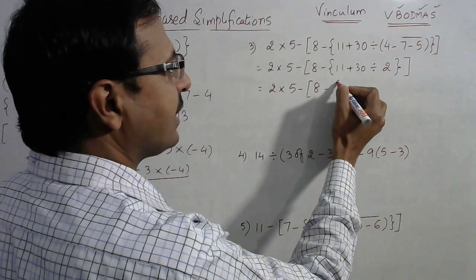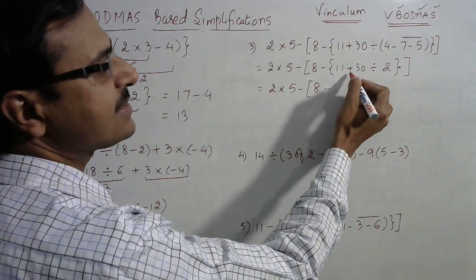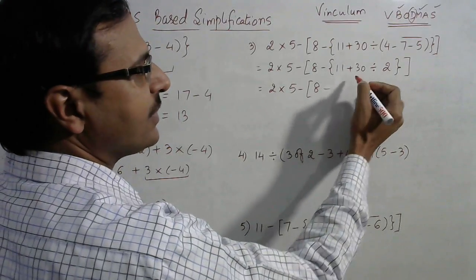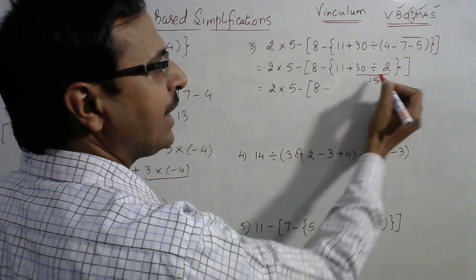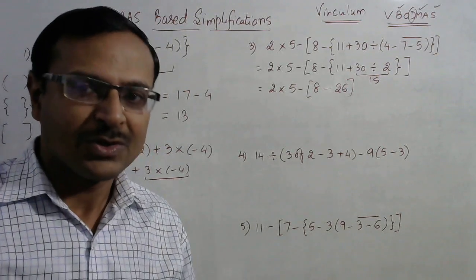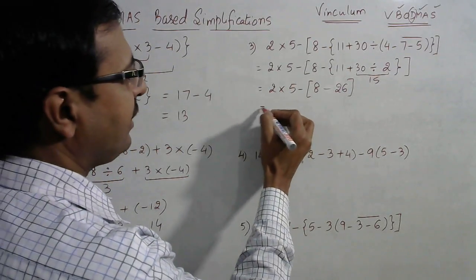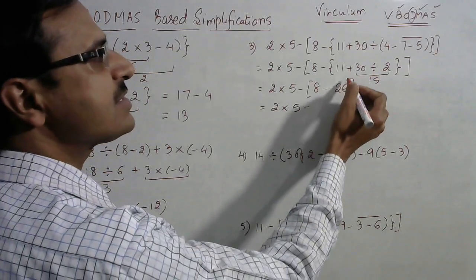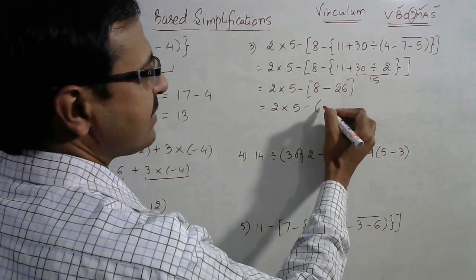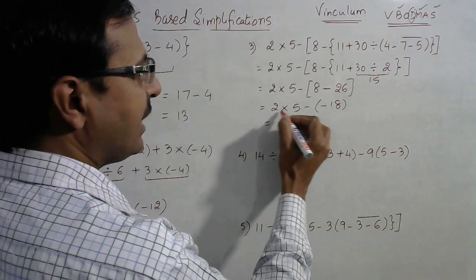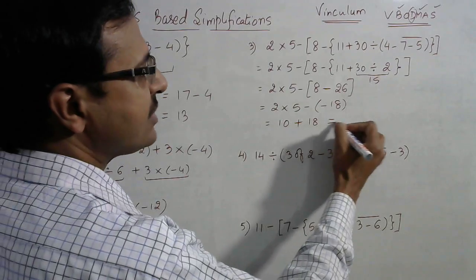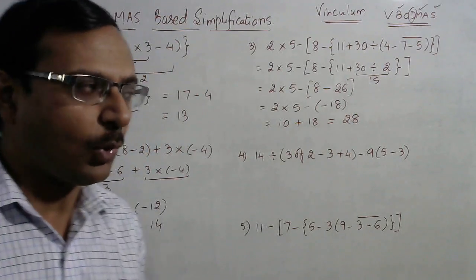In the curly bracket we have two operations: addition and division. Division comes first, so 30 divided by 2 gives 15, and 11 plus 15 reduces to 26, removing the curly brackets as well. Now we have 2 into 5 minus (8 minus 26). Since this is a negative difference, 8 minus 26 is minus 18. We multiply first then subtract: 2 into 5 is 10, and minus minus becomes plus 18, which gives us 28 as the answer for this third problem.